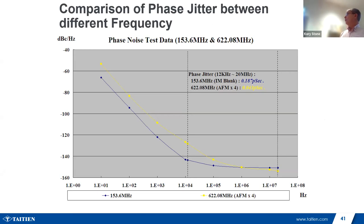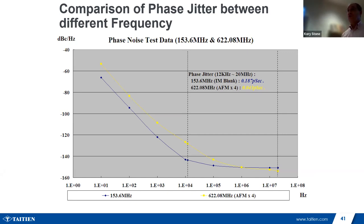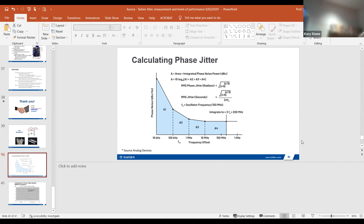Here's a look at phase noise comparing 156 MHz, 153.6 MHz, and a 622 MHz oscillator. The 622 MHz uses a multiplier but ends up with 0.43 picoseconds of jitter, relative to the 153.6 MHz at about 187 femtoseconds — about four times that. So jitter will change based on the frequency you start with, and that's an option to consider. Also, to calculate phase jitter from phase noise, you look at the areas under the phase noise plot and plug them into the logarithmic calculations — that's a quick way to convert phase noise to phase jitter.